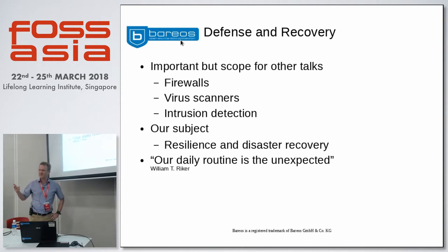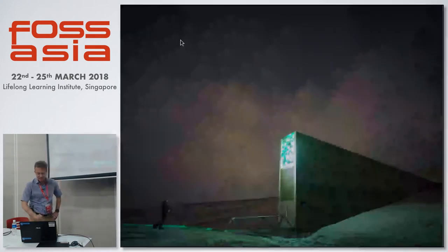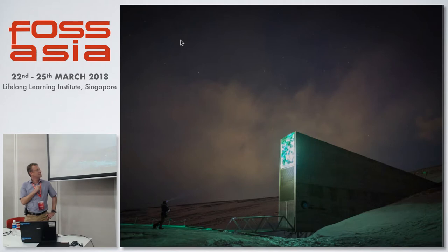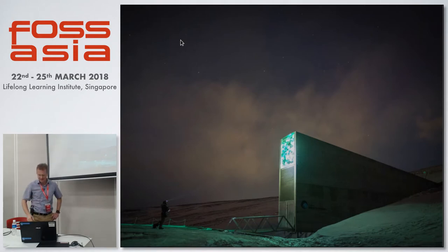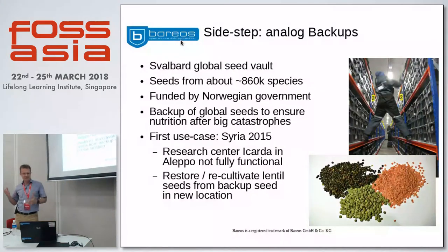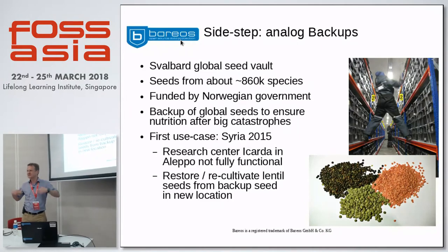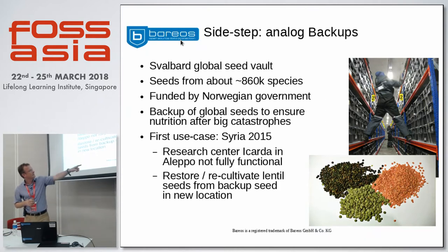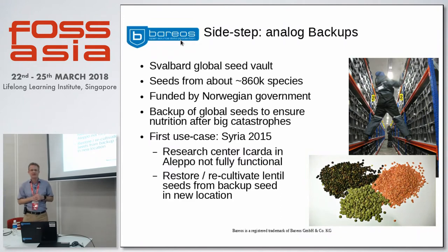Before we talk about backup of data, I want to show another picture — a little side trip. This is the entry to the so-called Svalbard Global Seed Vault in Norway, a project funded by the Norwegian government. It hosts about 860,000 different seeds of species. The idea is to be prepared for all kinds of catastrophes so that afterwards you can grow food again and ensure nutrition and diversity. The inside of the building shows someone storing items there, and you can see several lentil seeds. There was a first use case of this seed vault in 2015, when we look at Syria and the civil war in 2010.